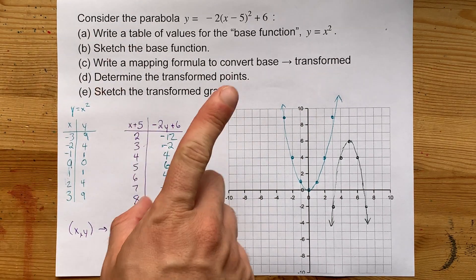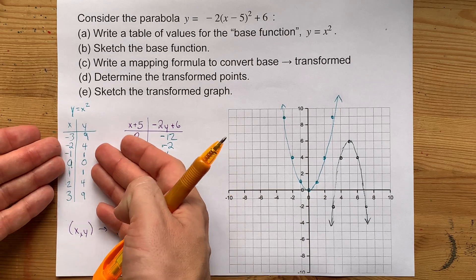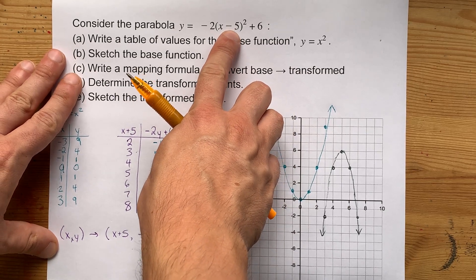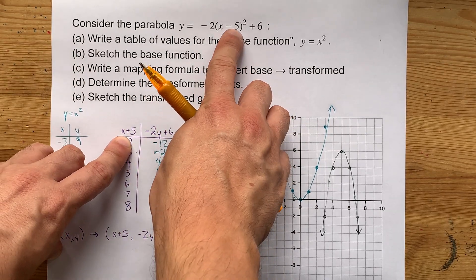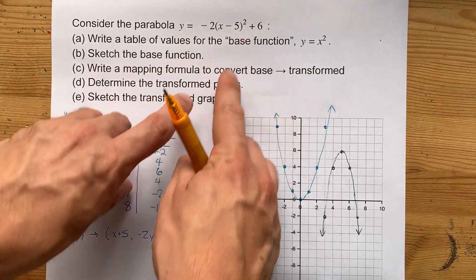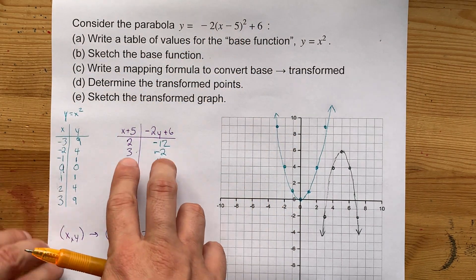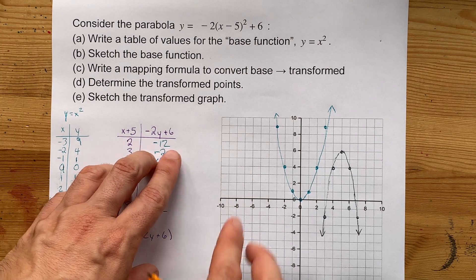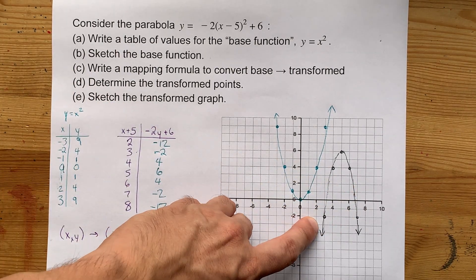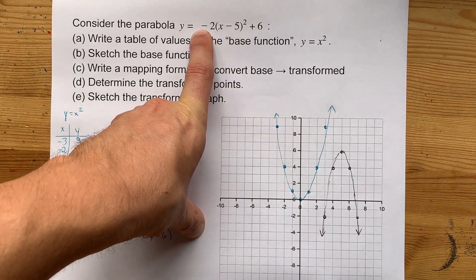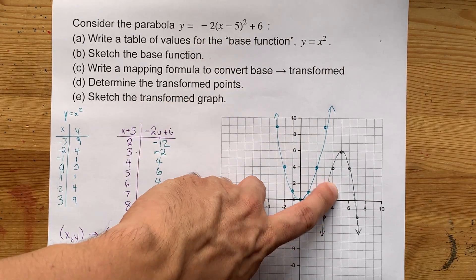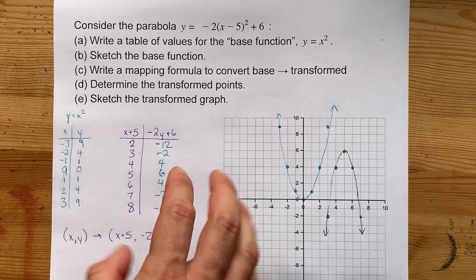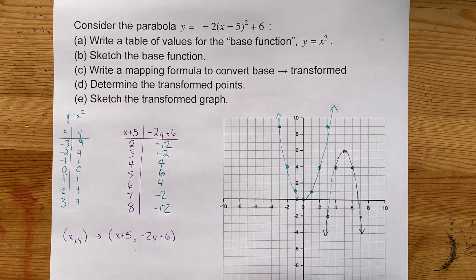What you came for is the transformations: you have your base curve and the transformations applied to it. Anything inside the brackets is horizontal and is the opposite of what you think. Anything outside the brackets is vertical and taken as-is. Apply those changes to each coordinate to generate new points on the new graph. This graph opens down — that's what the negative is for — and the vertex is at (5, 6), exactly as the vertex form equation predicts. Thanks for being with me, and best of luck.